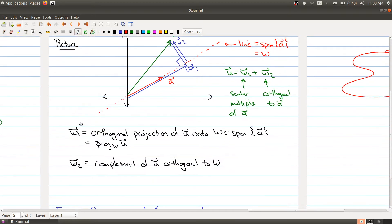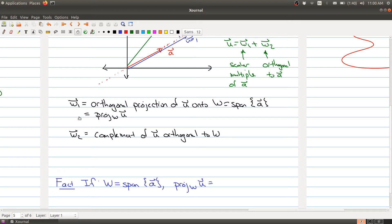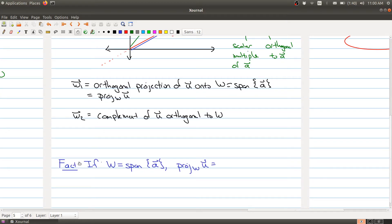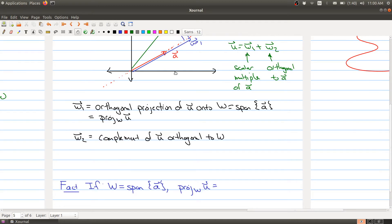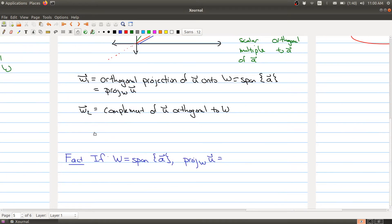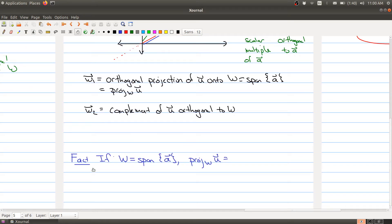Now I think the textbook actually works out all the details, but it may be written in the language of inner products. Let me do it in the special case that we're looking at. So if w is the span of a, think of it as a line in some rn, can we actually figure out a formula for this vector w1? And in fact we can.